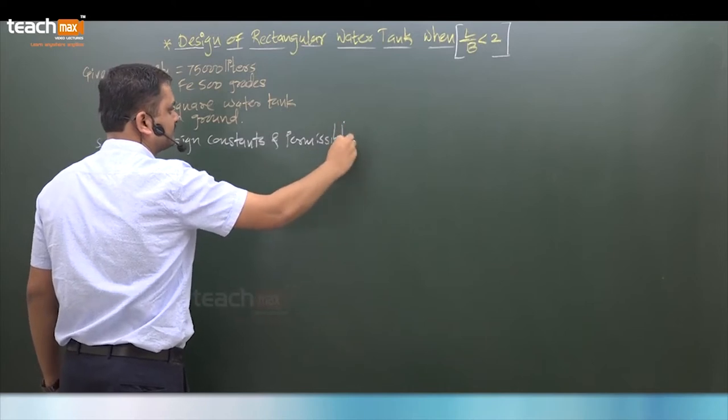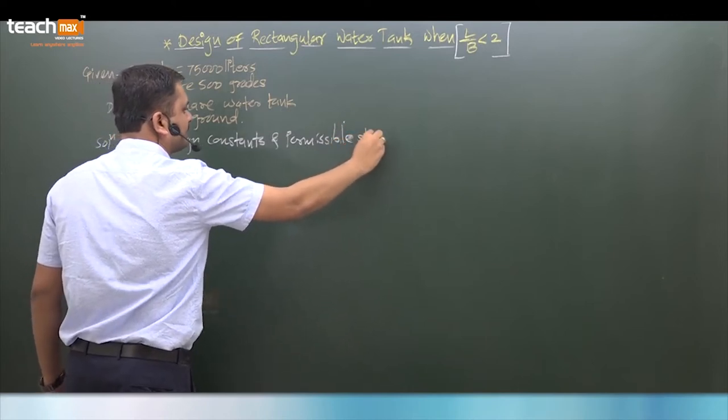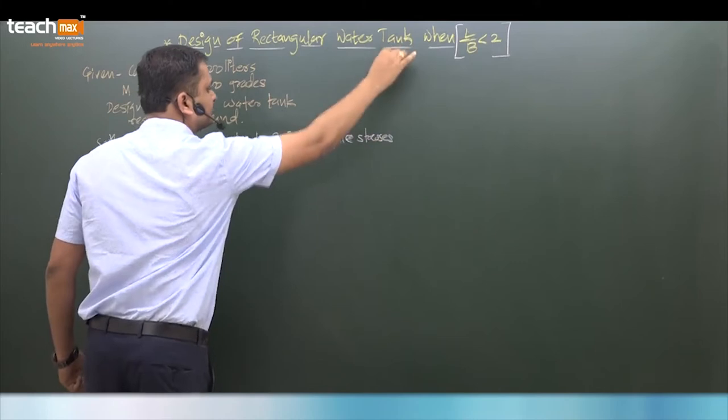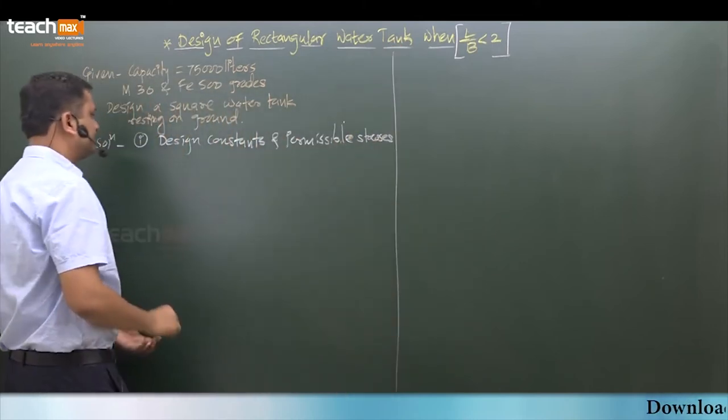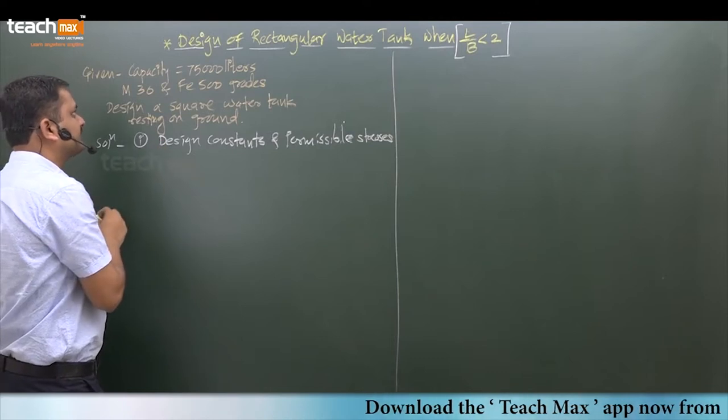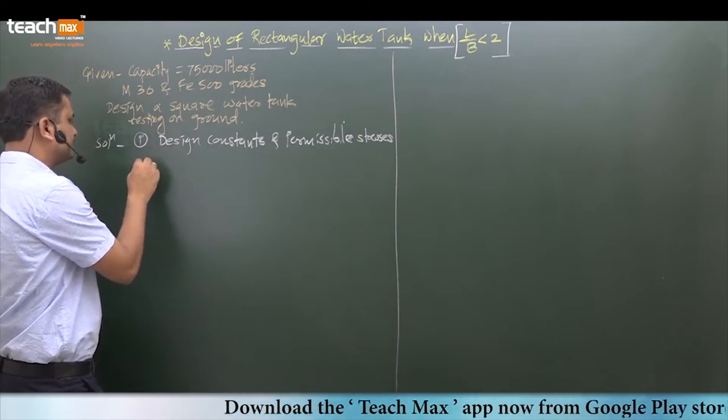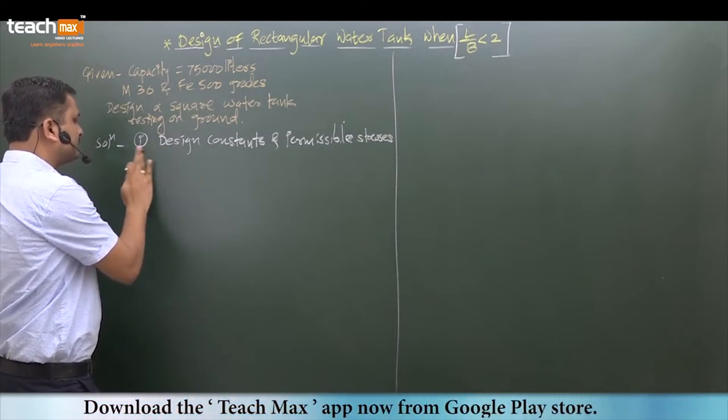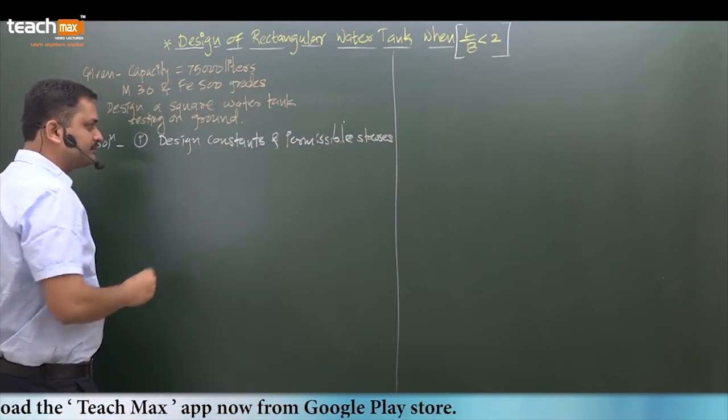Permissible stresses - that we will consider in the first step. What will be the design constants for M30 and Fe500? We have to consider first of all the modular ratio; for that, first consider permissible stresses.